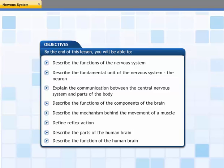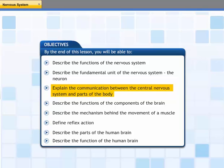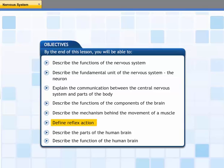In this lesson, you will learn about the nervous system and its components, reflex action, and the structure of the human brain. At the end of this lesson, you will be able to describe the functions of the nervous system, describe the fundamental unit of the nervous system — the neuron — explain the communication between the central nervous system and parts of the body, describe the functions of the components of the brain, describe the mechanism behind the movement of a muscle, define reflex action, describe the parts of the human brain, and describe the function of the human brain.